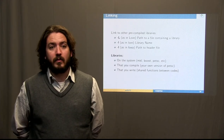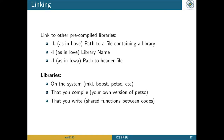There are several ways to link to pre-compiled libraries. Capital '-L' (as in love) gives a path to a library directory — if you're linking to many libraries all within a single directory, the compiler will search through those and find what's required. Lowercase '-l' followed by the library name links to a specific library — we linked to the math library with '-lm'. For some things you also have to link to the header file for the library, using capital '-I' (as in Iowa) to give a path to the header file.